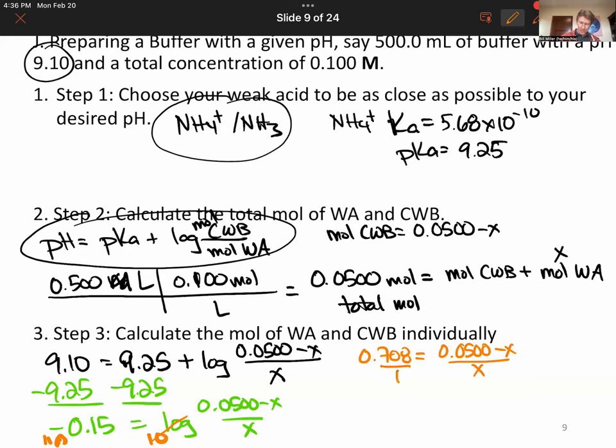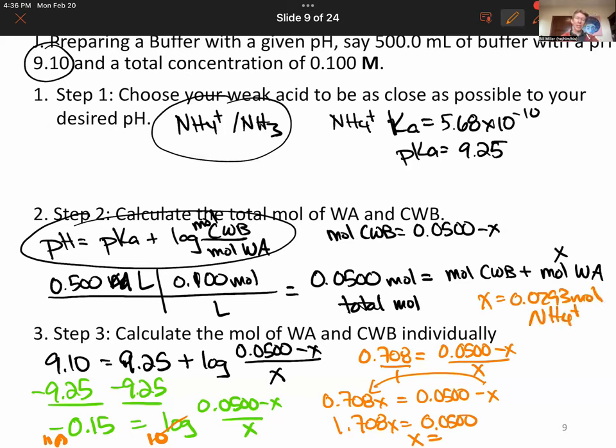Now, cross-multiplying here, I get 0.708x equals 0.0500 minus x. Take the x over to the other side, I get 1.708x equals 0.0500. And x equals 0.0500 divided by 1.708, 0.0293. And that's going to be my moles of weak acid, which is ammonium. And that means that my moles of weak base will be 0.0500 minus that, 0.0207. And those will be my moles of ammonia.